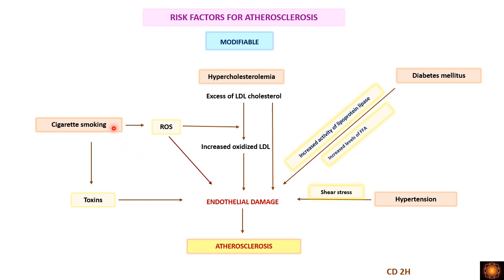Cigarette smoking: toxins from cigarette smoke can directly cause endothelial damage, and they increase reactive oxygen species. These reactive oxygen species directly damage the endothelium or oxidize LDL cholesterol, and this oxidized LDL again causes endothelial damage. Ultimately, this endothelial damage leads to atherosclerosis.